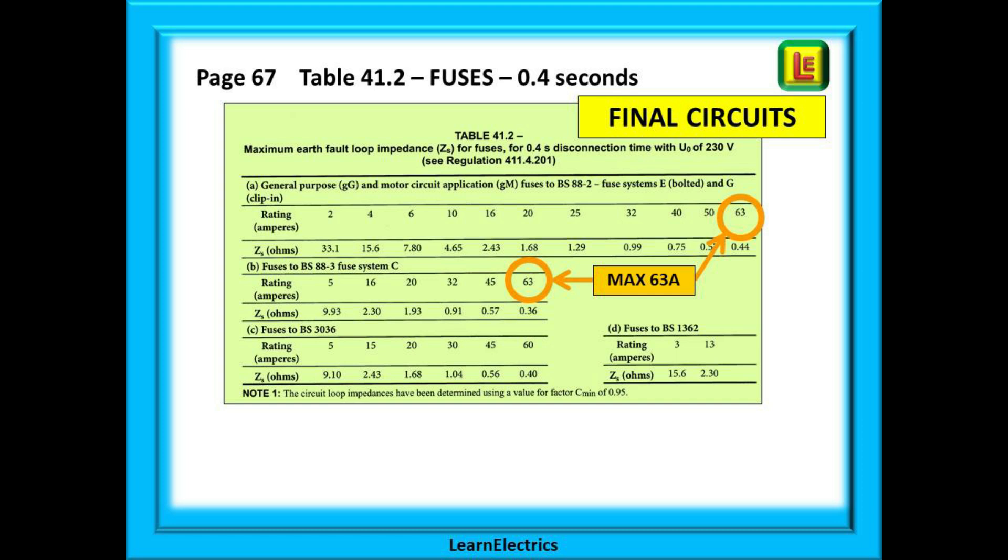This table is for final circuits only. The next fuse type is BS3036, the old re-wireable type fuses. And lastly, the plug-top fuse BS1362. Look also at Note 1 just below the table. It states that these tables have been adjusted for a CMIN factor of 0.95. This is an adjustment that has already been made to the ZS figures to allow for 5% voltage fluctuations. And we cover this in more detail in another video. You may get a question that asks what the CMIN factor is. And now you know. 0.95.